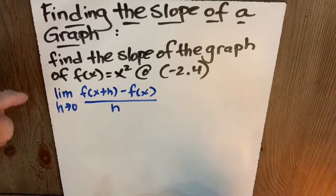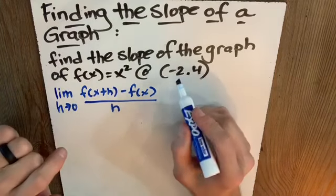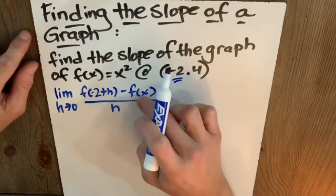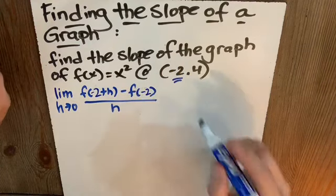Well, our x here clearly is negative 2. So we don't want just x. We want negative 2 and negative 2. Let's take an aside.